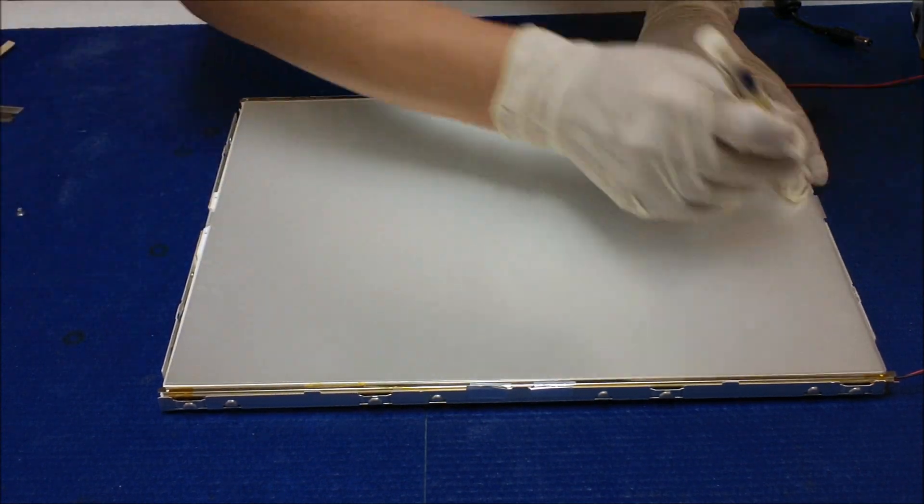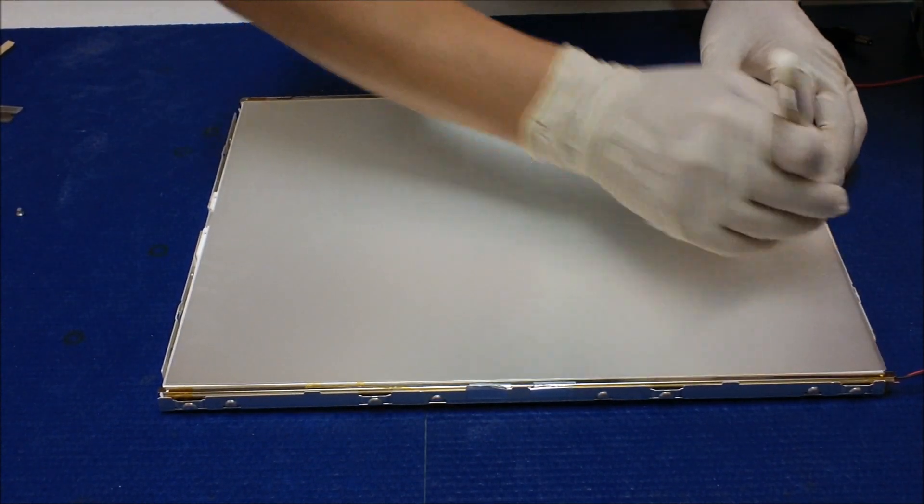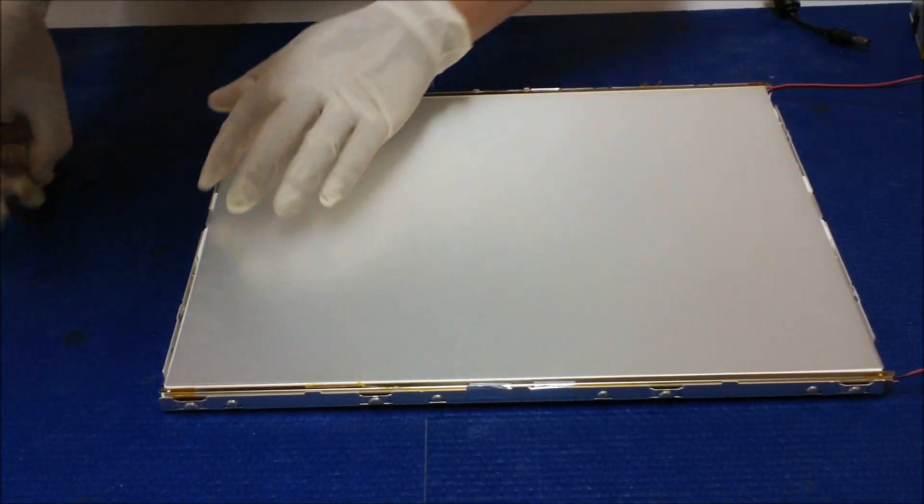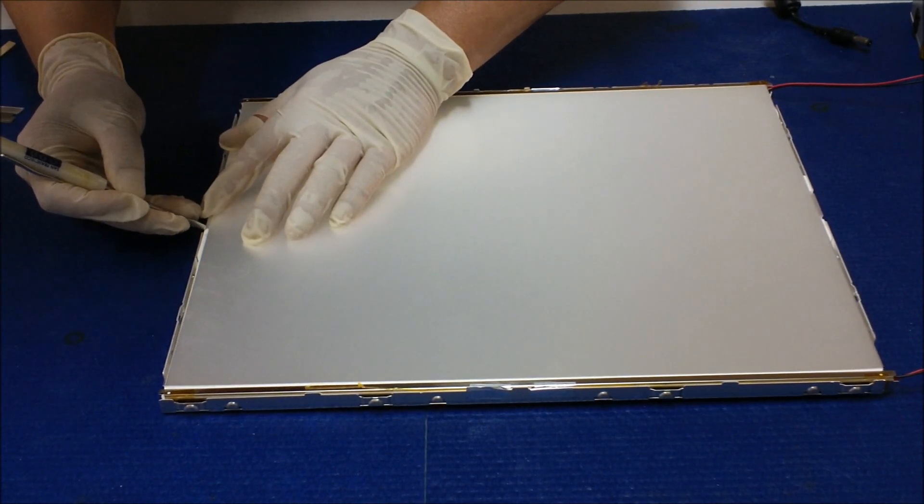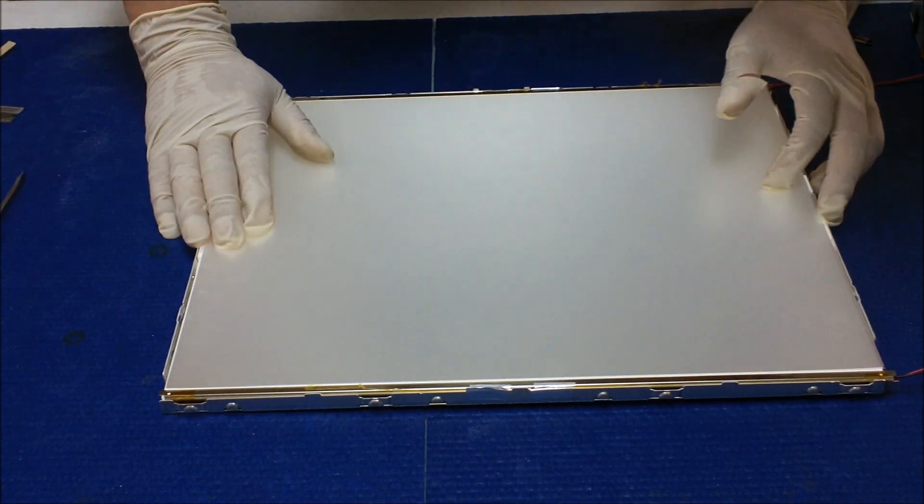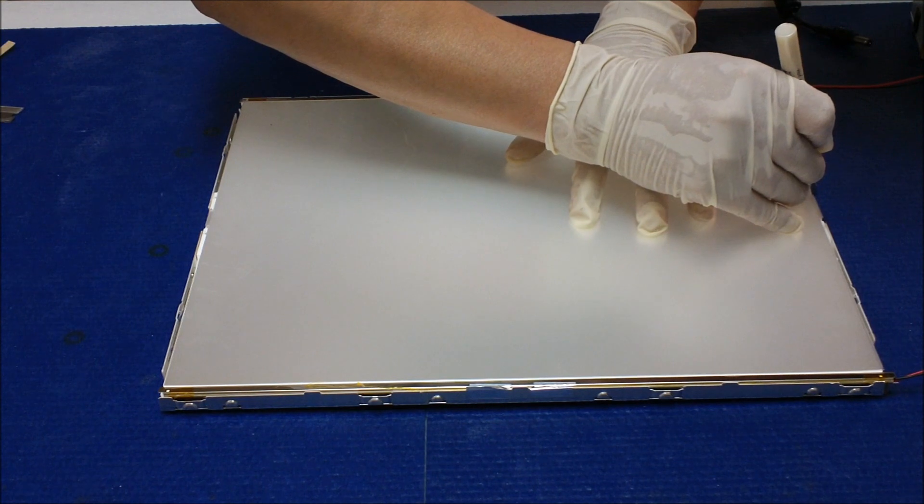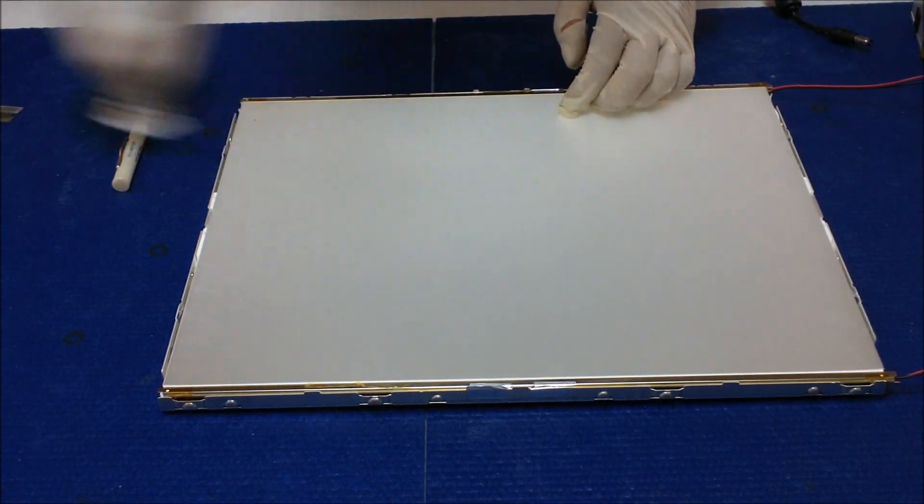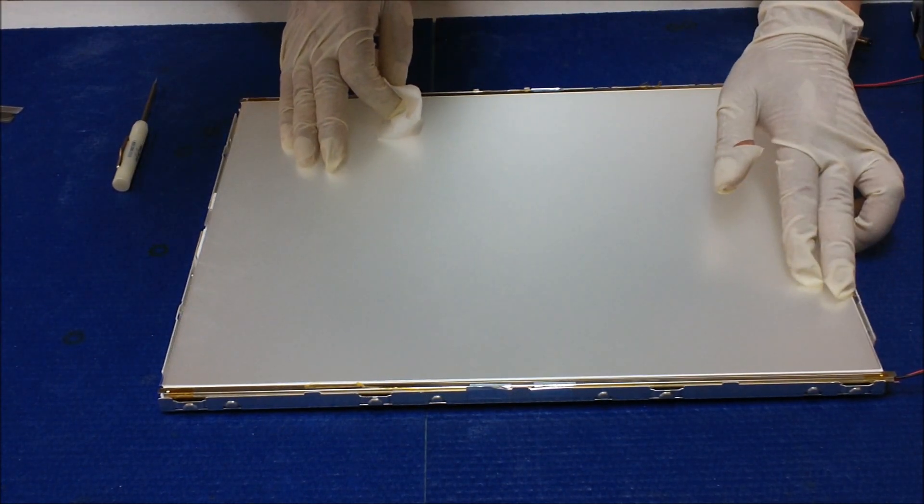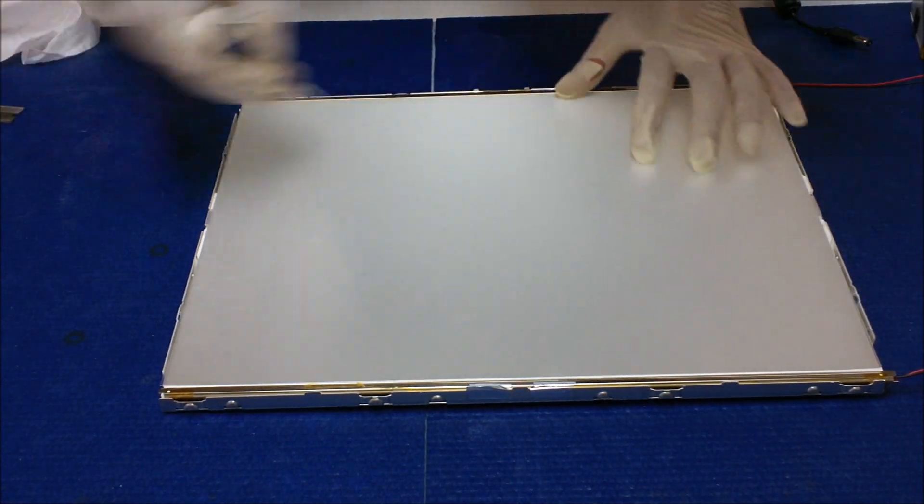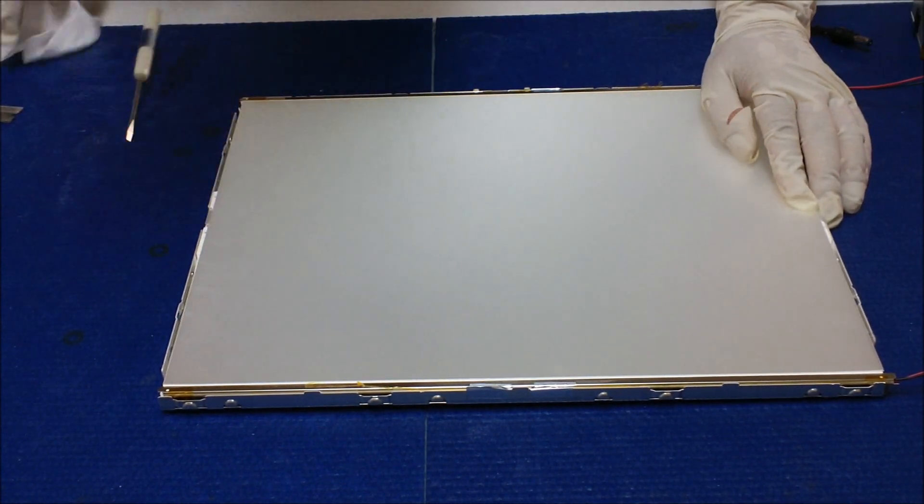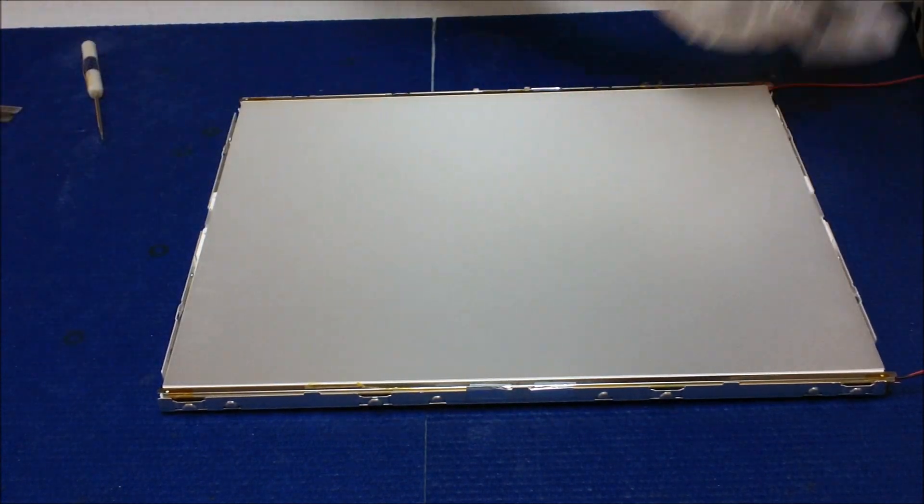Now make sure it's clean. Oh, it's a little bit dirty here. I have to do it again because I messed up when I'm cleaning. Clean. Now we're going to put the plastic back, plastic film.